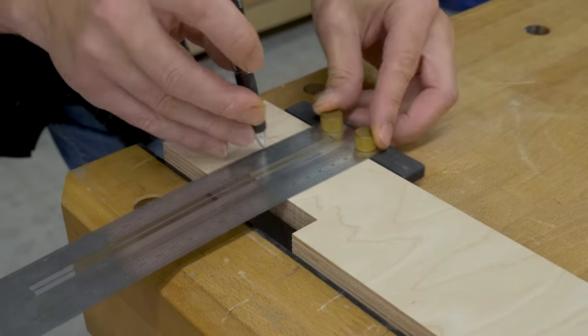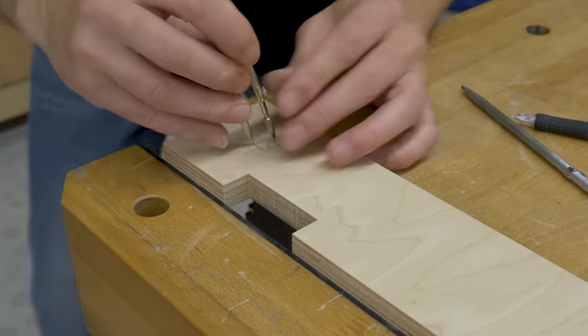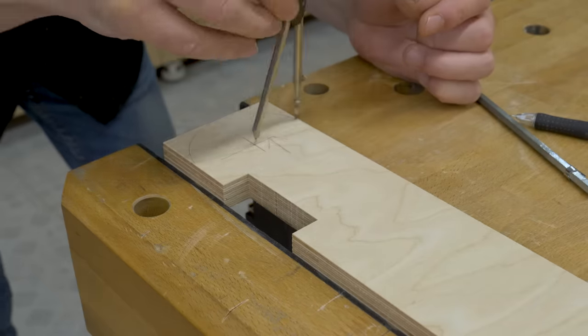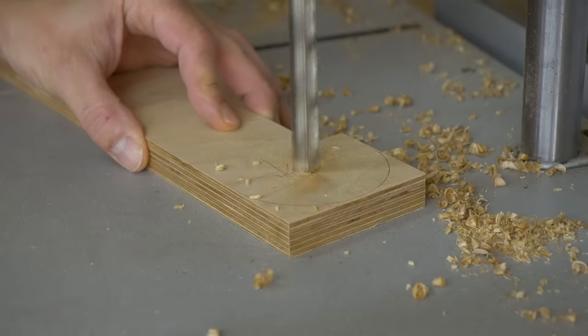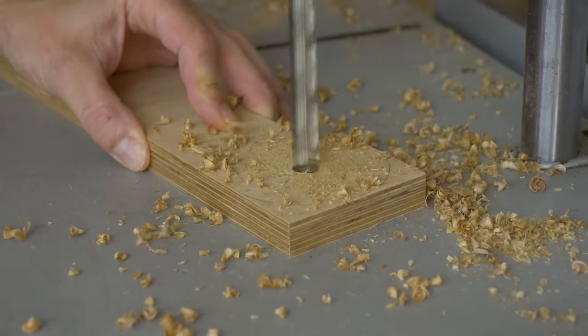Now I'm going to mark the hole for the rotation axis and the curved cut for the top of the legs. I drill the axis hole with a column drill and make the curved cut with the band saw.